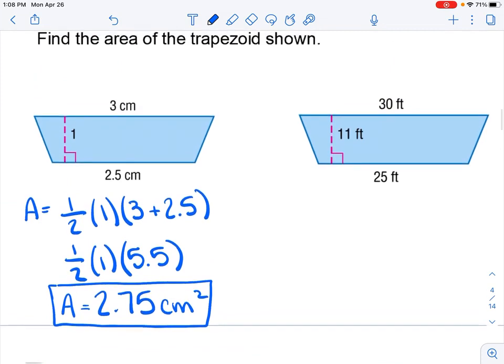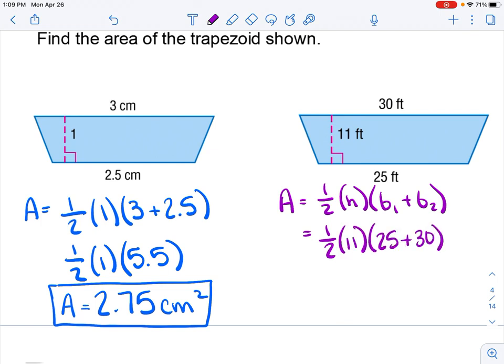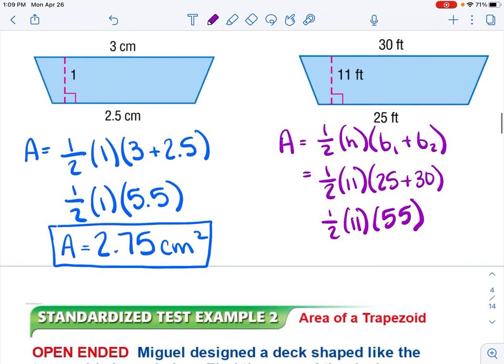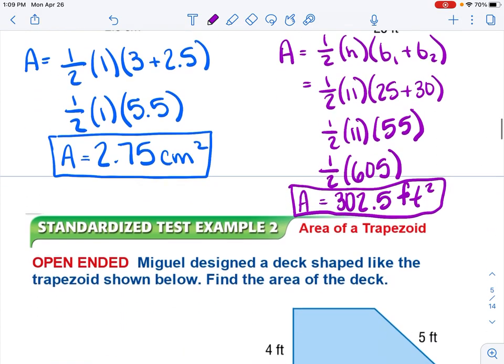Same thing goes for this next one. We have our equation: area equals one-half times height times base 1 plus base 2. We just plug in our info. It doesn't actually matter which one is base 1 and base 2 because they are being added together. Then I just finish solving. So I get 302.5 square feet for my area.